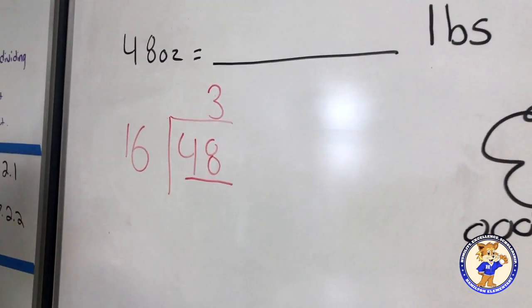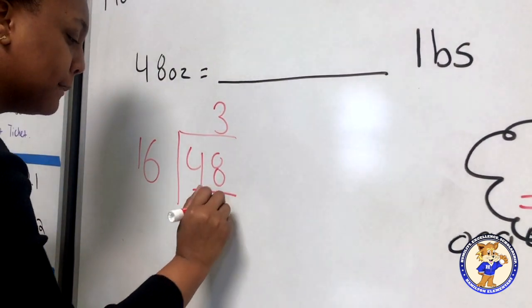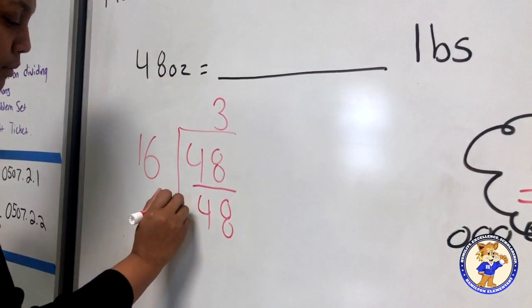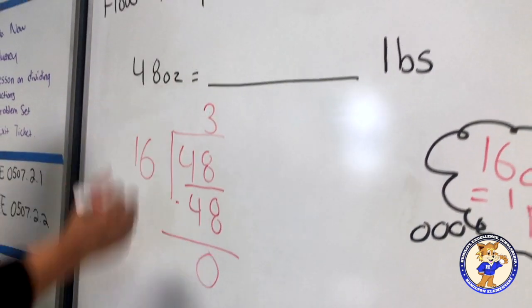And then if I do it a long division way, 16 times 3, that gives me 48. And 48 minus 48 is zero. So I'm left with 3.